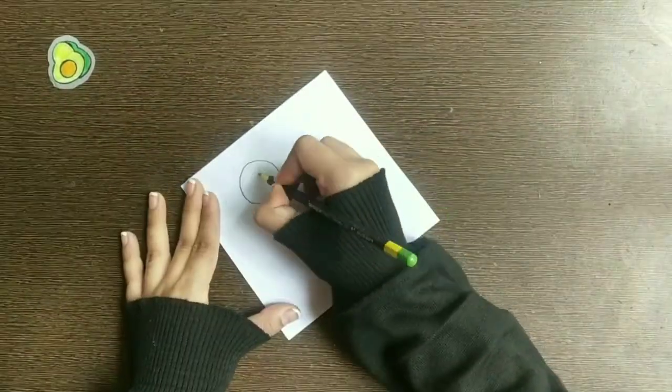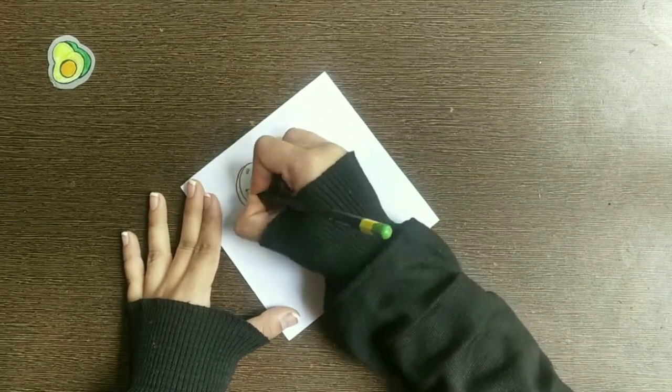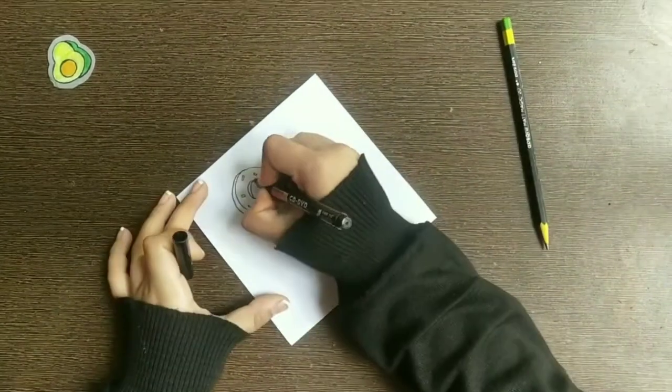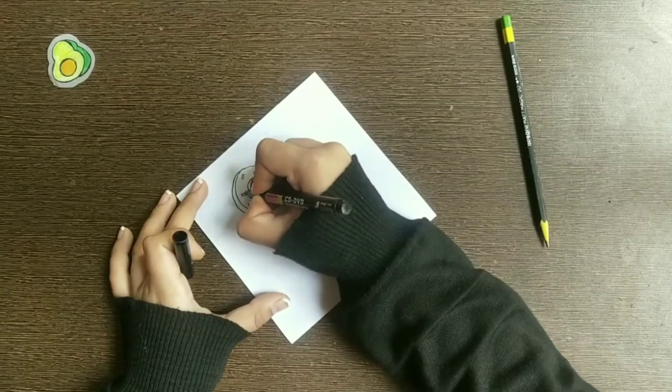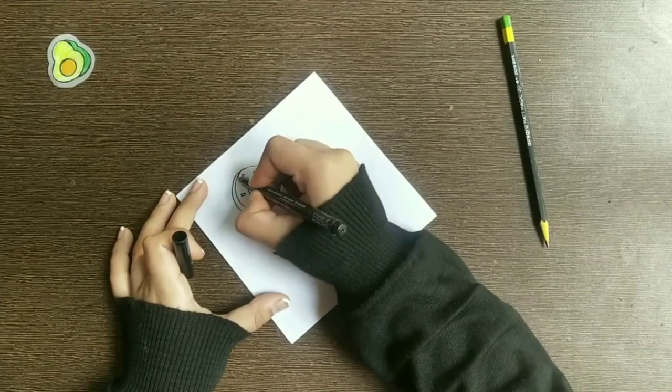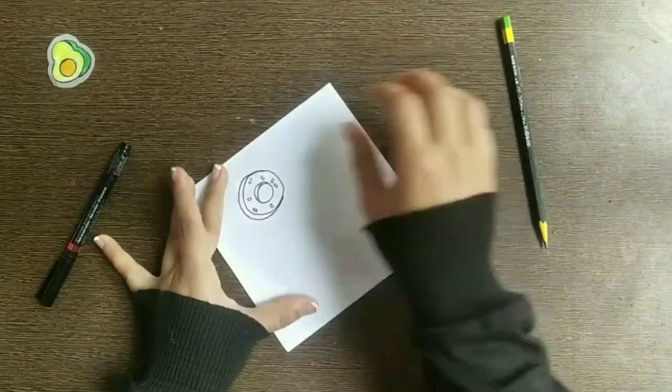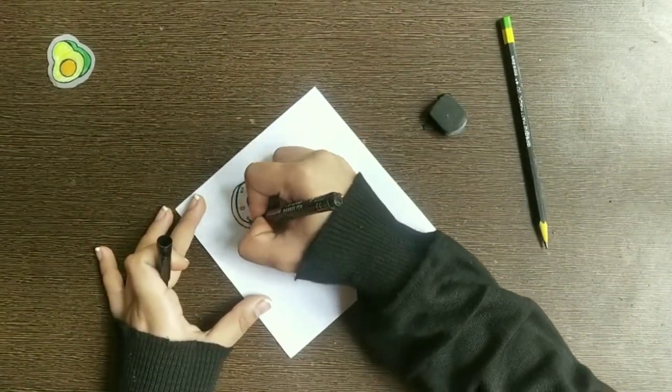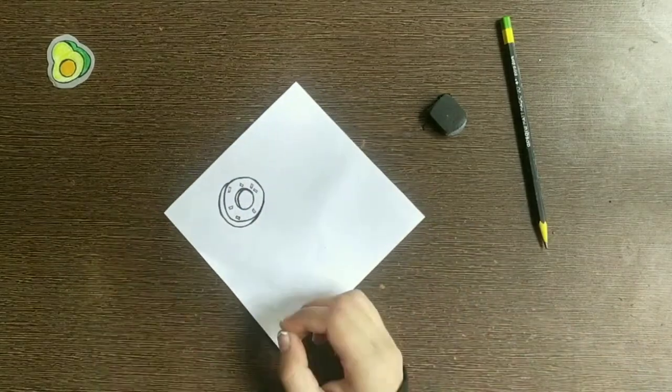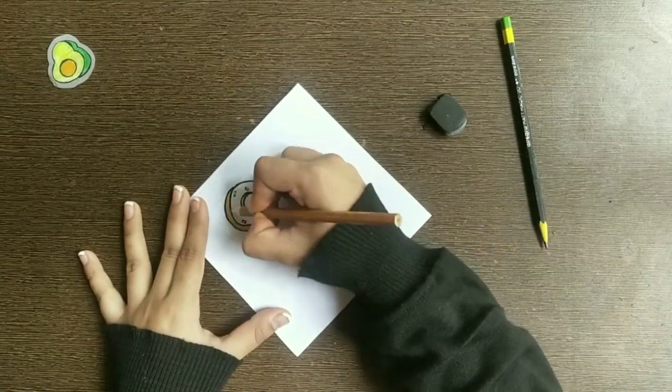Now for the second sticker it is similar to the first sticker but it's not the same. For the second sticker I am making a donut. Now I am outlining it and rubbing out all the pencil marks.